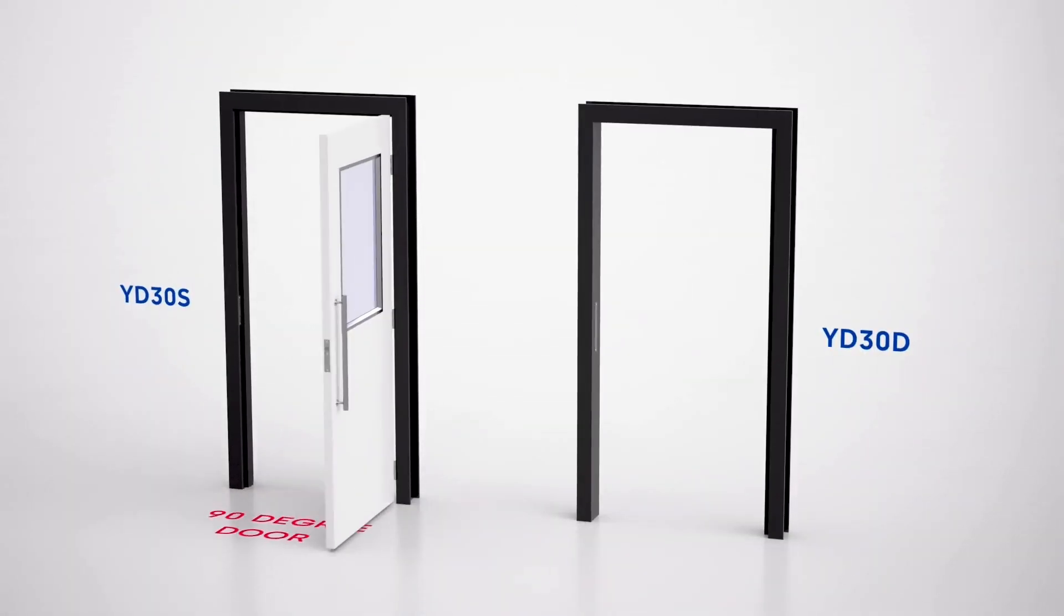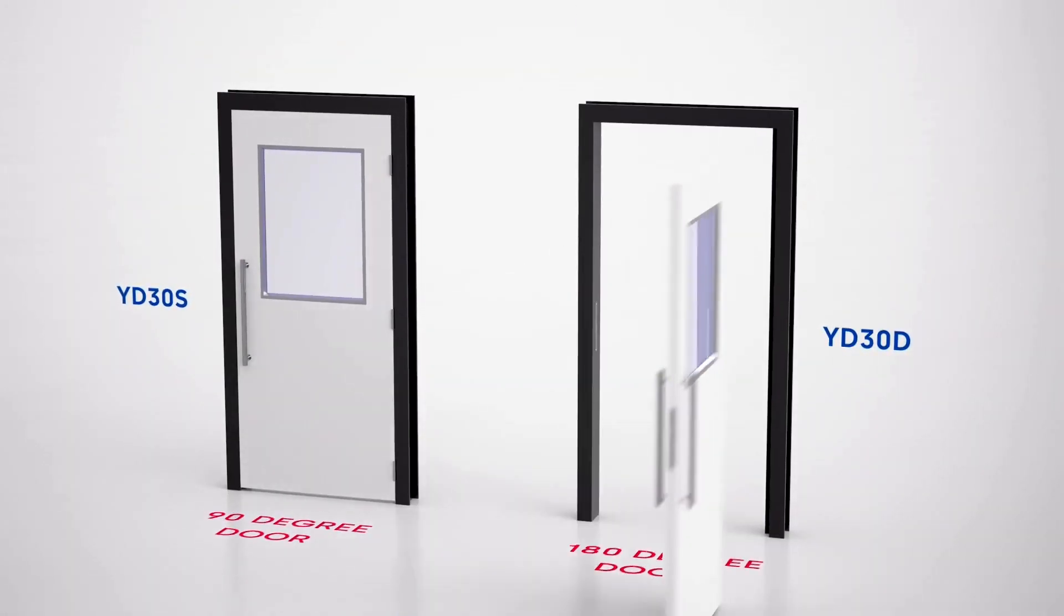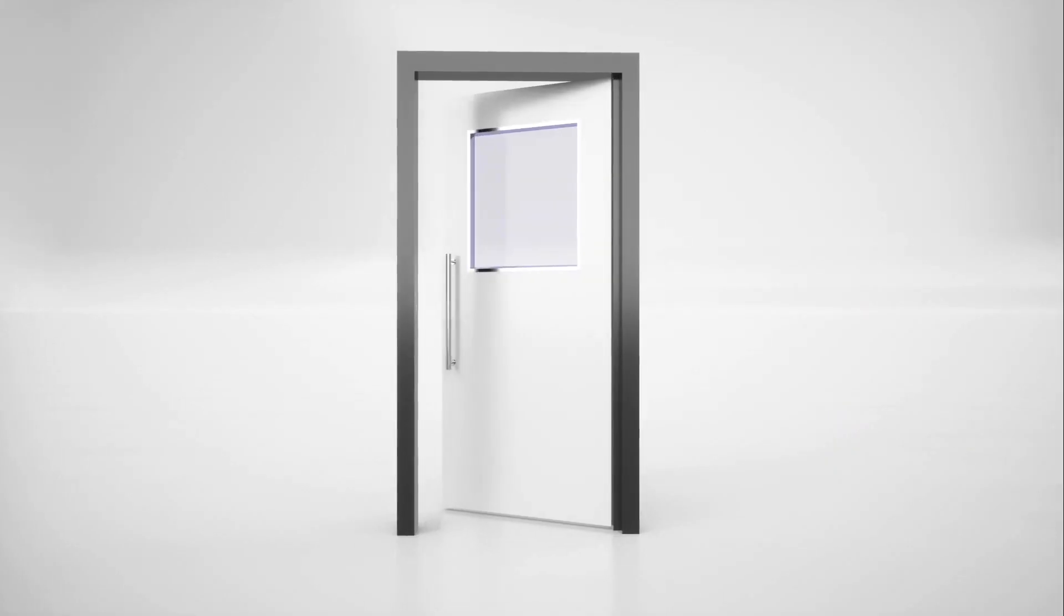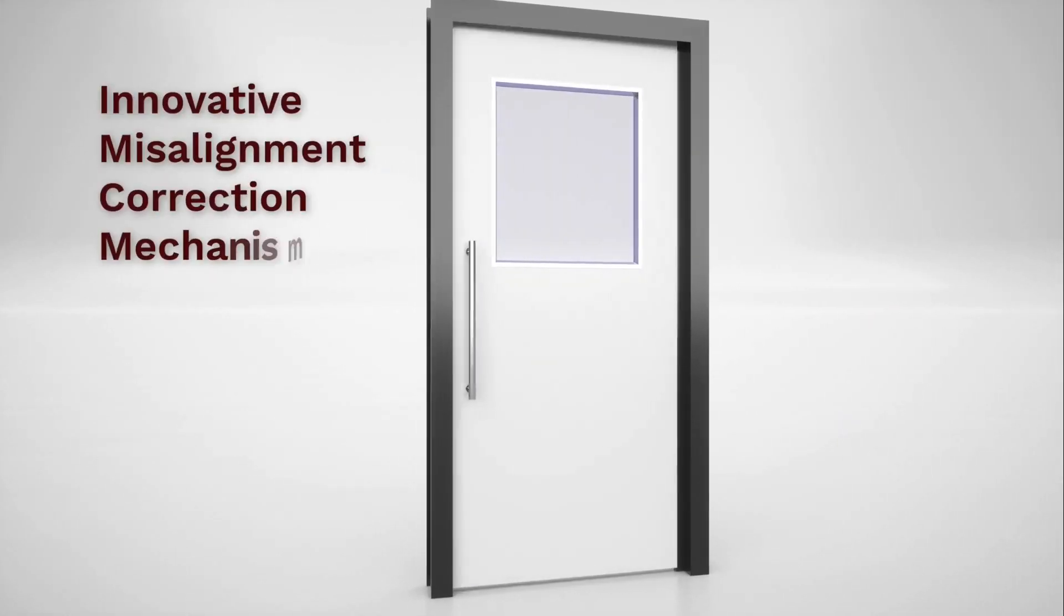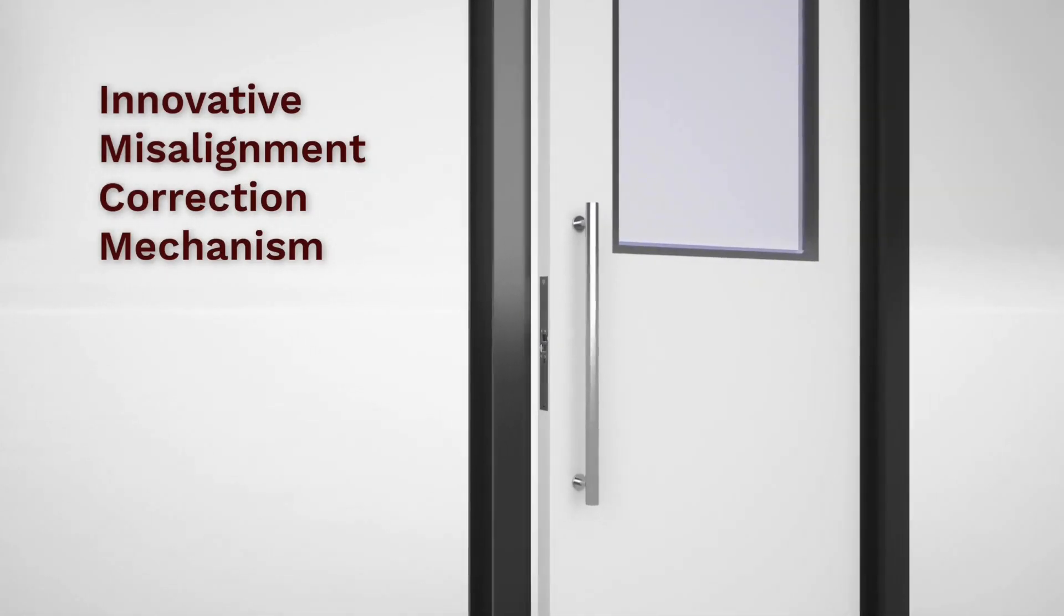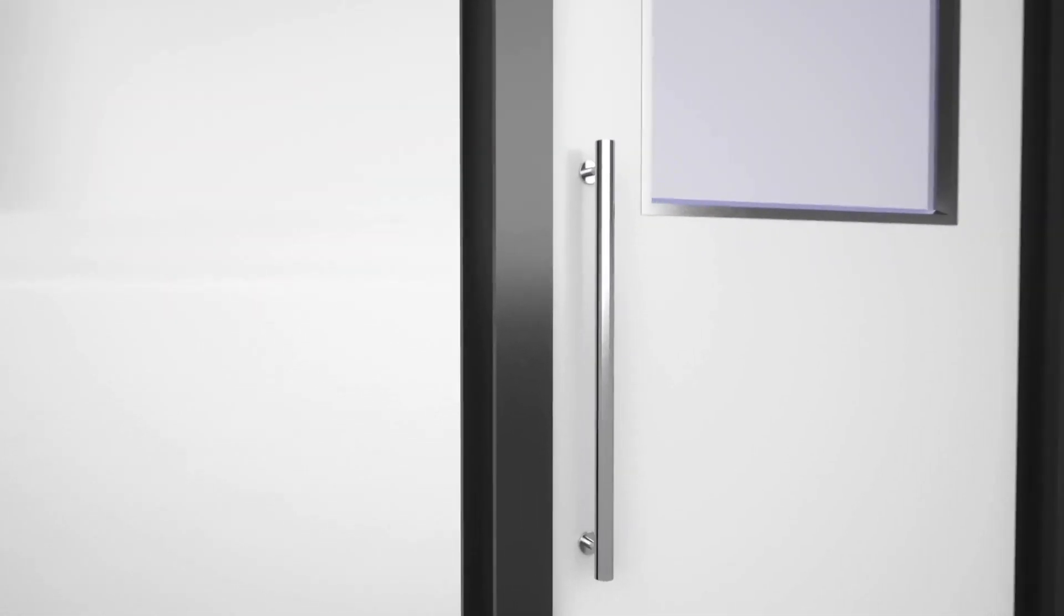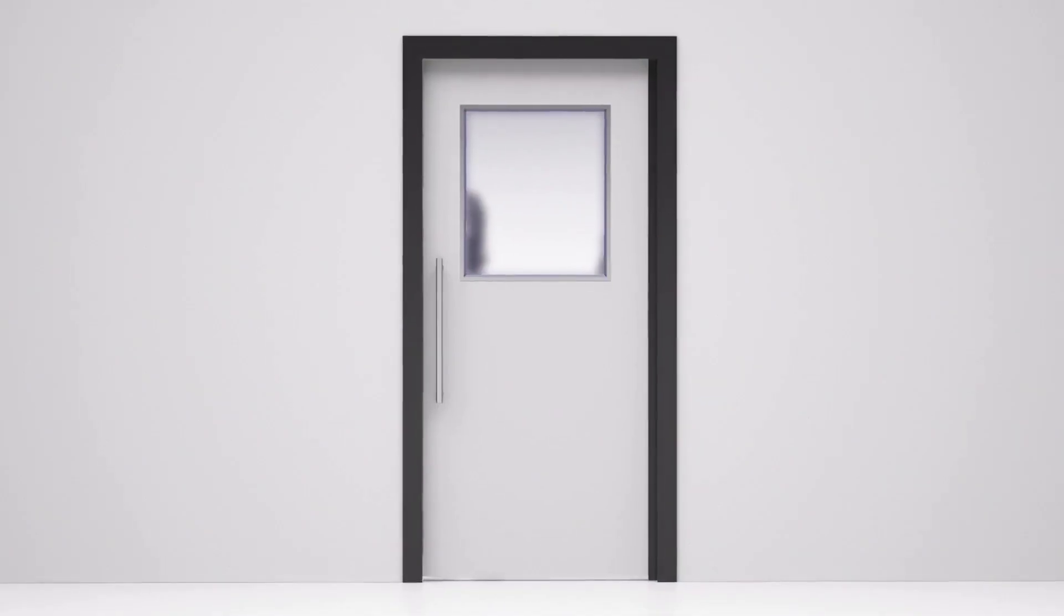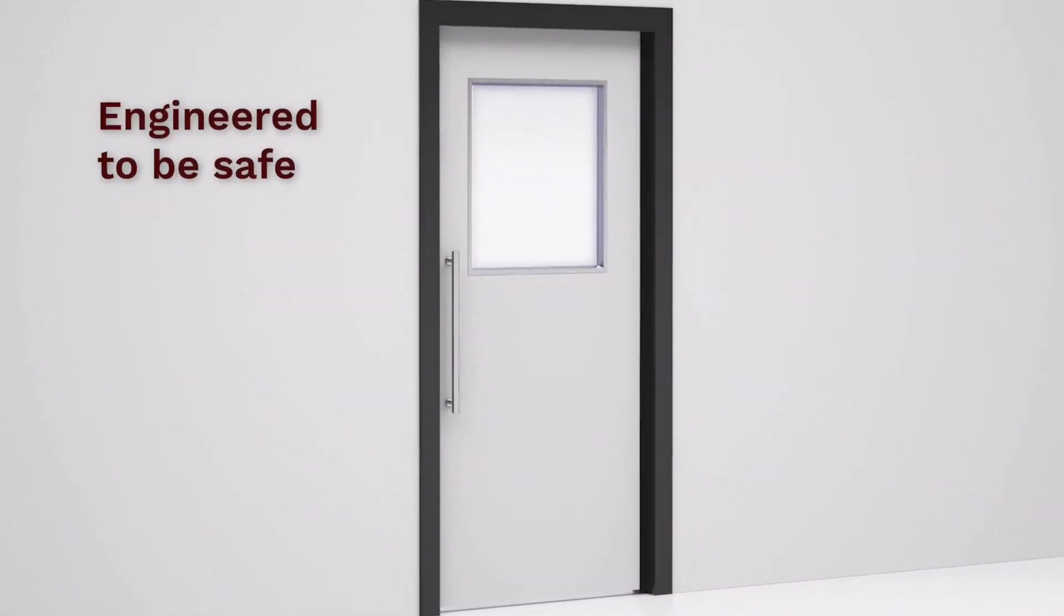the YD-30S is the perfect solution for any single-acting door, while the YD-30D is your go-to lock for 180-degree double-acting doors. Both YD-30 locks feature innovative misalignment correction mechanisms allowing the lock to realign a door by up to 5 sixteenths of an inch for the YD-30S and up to 5 sixteenths of an inch in either direction on the YD-30D, correcting a common problem found with traditional electromechanical locks.